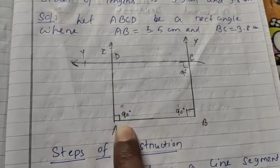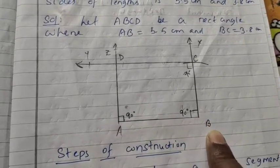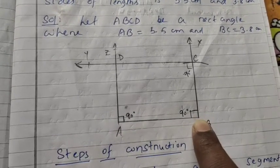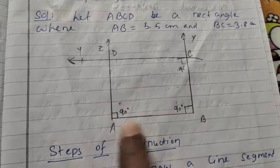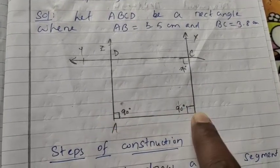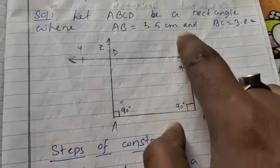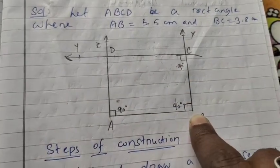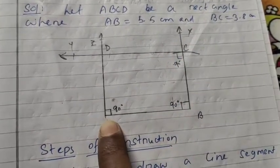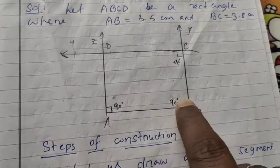First, draw a line segment AB of 5.5 cm, and then draw a ray BX making an angle of 90 degrees at AB at the point B. So BX is a ray forming a 90 degree angle at AB.